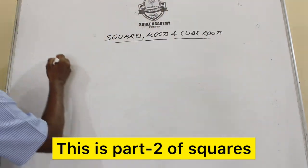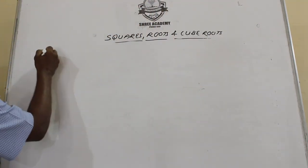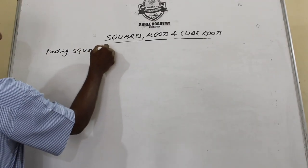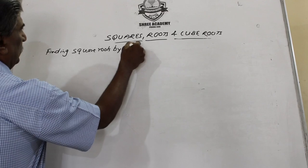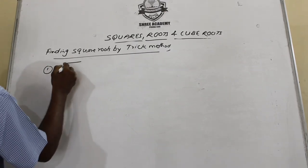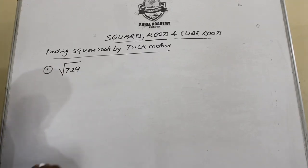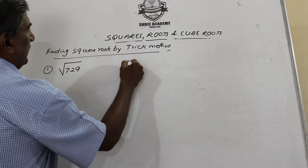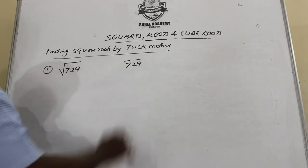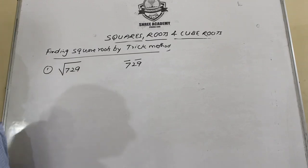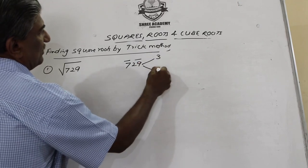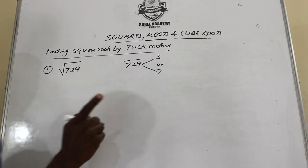We will see some examples of finding square roots by the trick method. Let's take a simple example: find the square root of 729. We put a bar on two digits starting from the right. For the units digit, nine — the possible combinations are 3 (since 3×3=9) or 7 (since 7×7=49). We only look at the units place, so we don't know yet which one; that will be decided later.